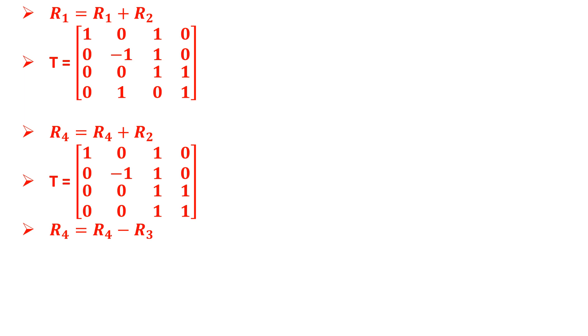Now subtracting the third row to third row, we get that T is equal to 4 cross 4 matrix with entries 1010, 0-110, 0010, and 0000.